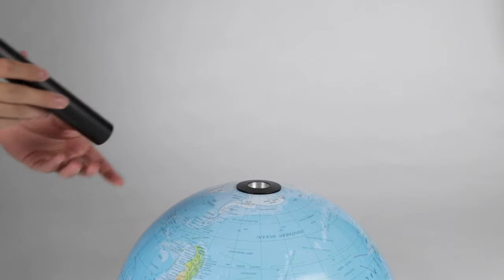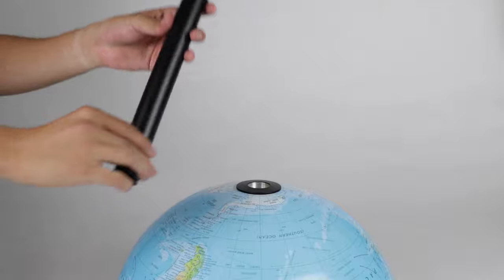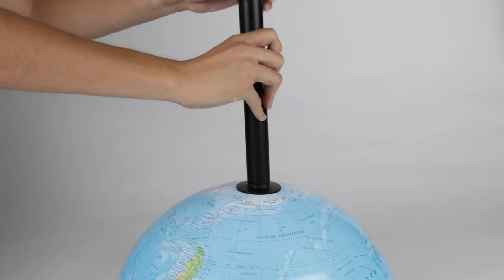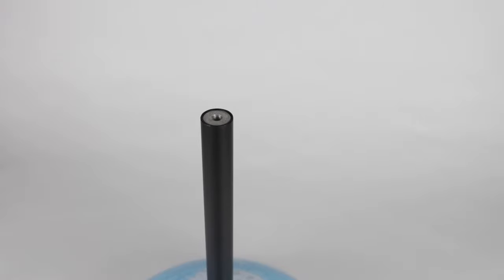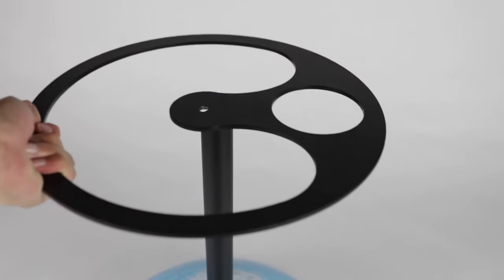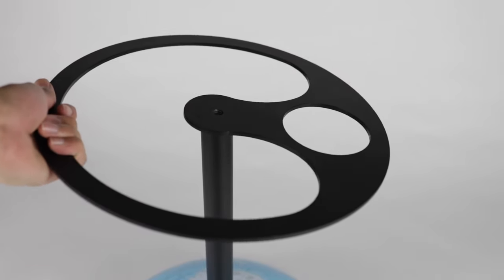Screw Part U into what has already been built. Place Part M on top of the now attached Part U and use Part V to secure Part M.